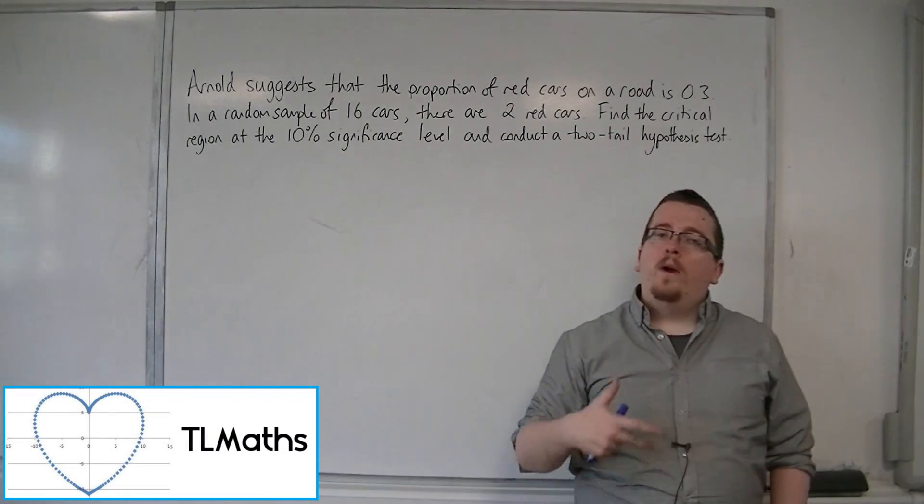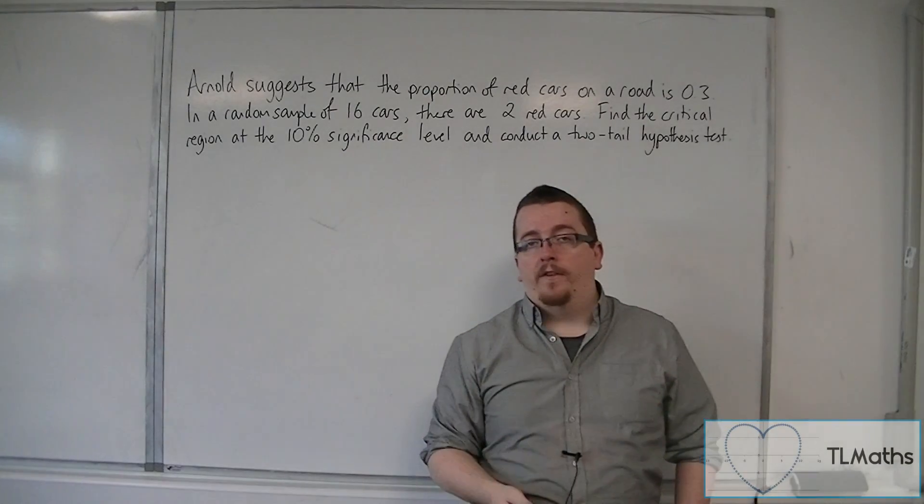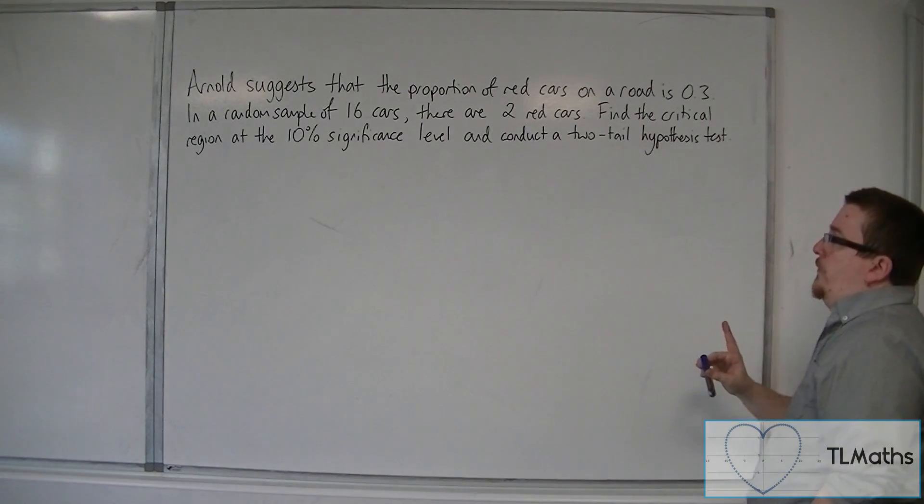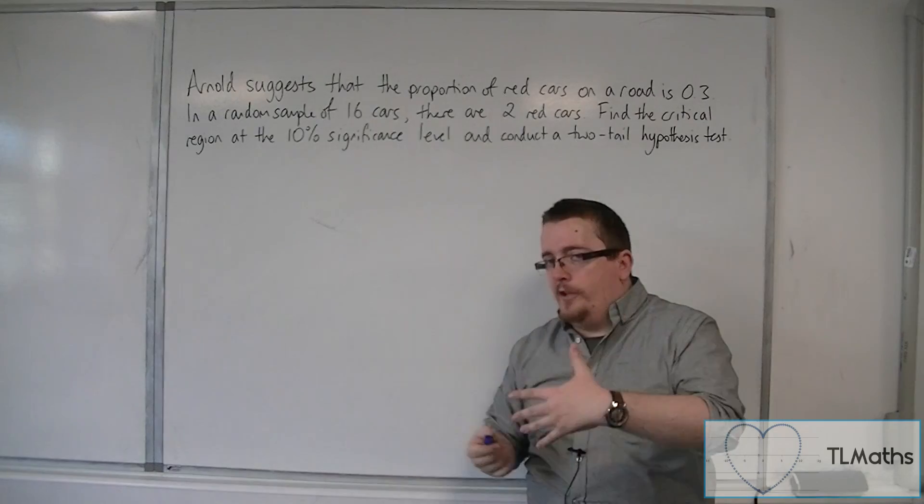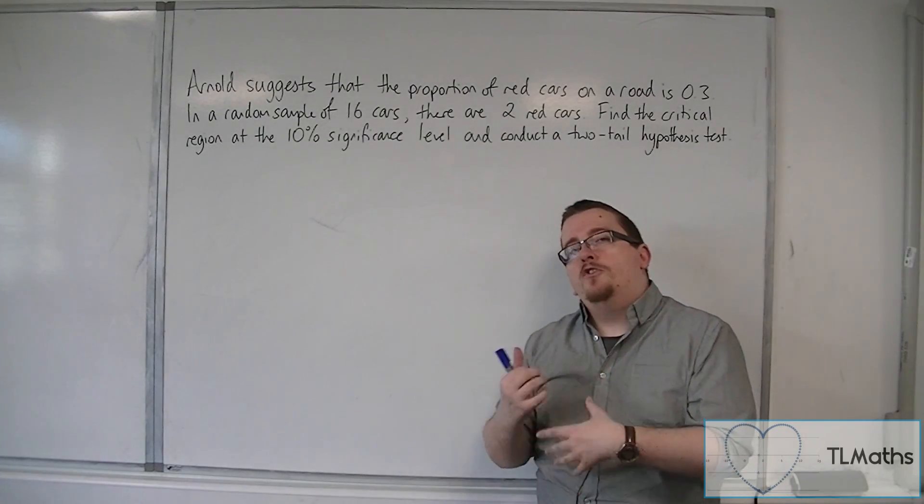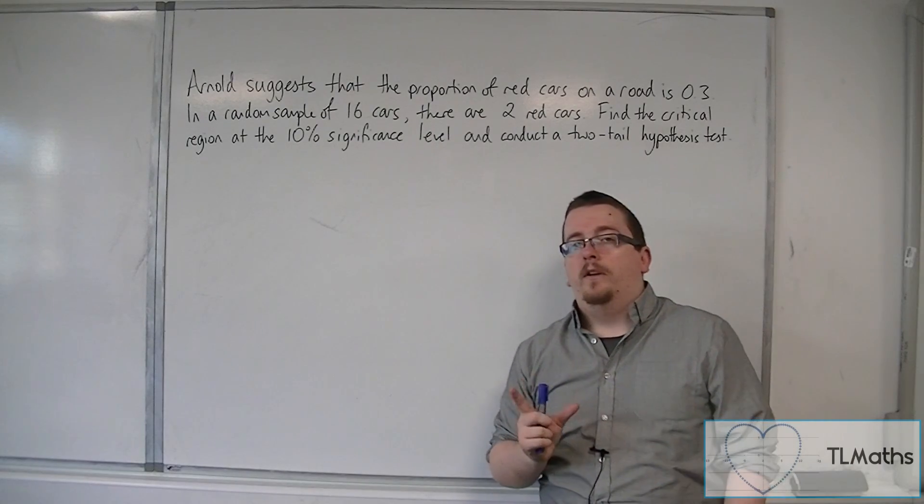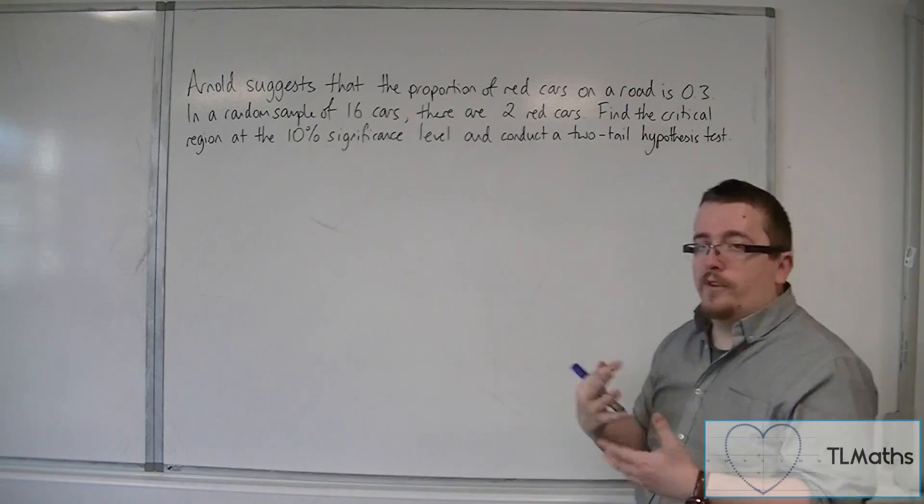In this video I'm going to show you a two-tailed test using the critical region method. Now, in the previous video I showed you how to do a two-tailed test not using the critical region method when you're just comparing a probability against one of the tails. So there are slight differences here.